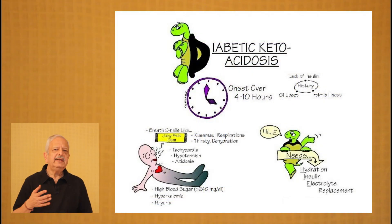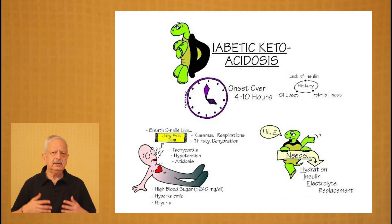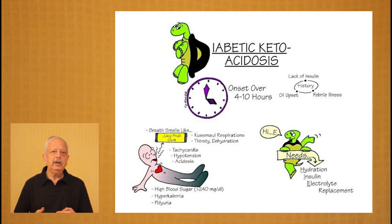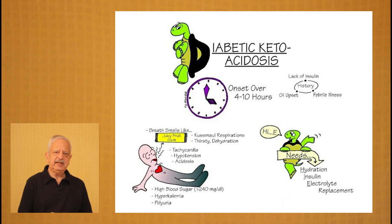DKA is a very serious condition. Symptoms can start with disorientation, confusion, lack of concentration, sweating, shaking, and shivering. When the acidosis goes out of control, the person can faint and go into a coma. In these cases, the patient needs to be rushed to hospital immediately and exogenous insulin — external insulin — has to be injected to save them.